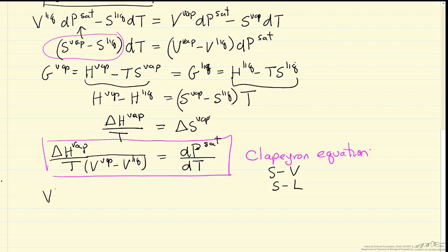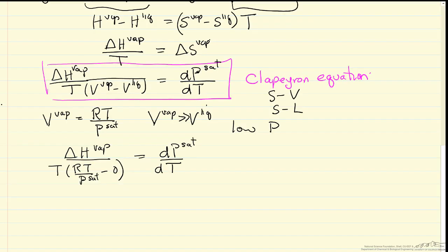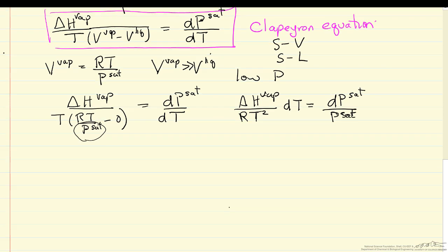We can further simplify this if we substitute for the vapor in terms of the ideal gas law, and we assume the volume of vapor is much greater than the volume of liquid, which would be true if we're looking at relatively low pressures. Let's make that substitution and also simplify. So let me rearrange and simplify this, where you will note that this pressure that was in the denominator of the denominator is now in the denominator on the other side of the equation.